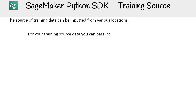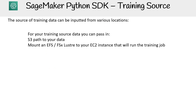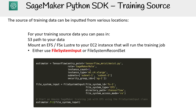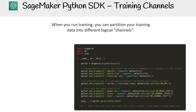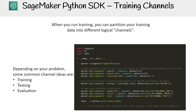The source of training data can be input from various locations. For training source data, you can pass in from an S3 path, mount from EFS, or use FSx Lustre — there may be even more options in the filesystem space. Here's an example of mounting EFS. When training, you can partition your training data into different logical channels depending on your problem. Some common channel names are training, testing, evaluation, images, and labels. There is a train parameter for our channels.